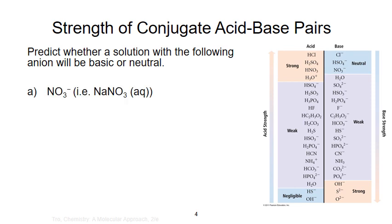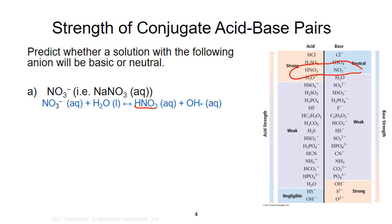For example, we want to predict whether a solution containing nitrate anion, NO3, will be basic or neutral — such as a solution in which we've dissolved sodium nitrate. To predict whether it's basic or neutral, we need to figure out the strength of the nitrate ion as a conjugate base. To do this, we first need to know its corresponding acid. If we add a hydrogen to nitrate, we get HNO3, nitric acid, which is a strong acid. This means that nitric acid dissociates completely in water, and the reverse process of the reaction between the nitrate ion with water is not likely to happen. Therefore, the solution will be neutral.